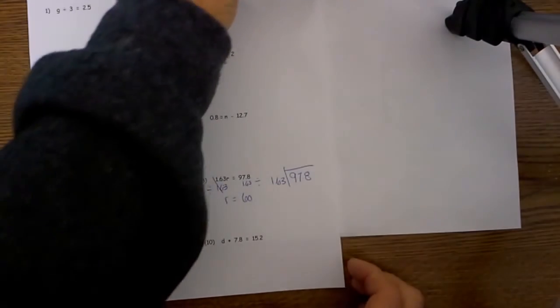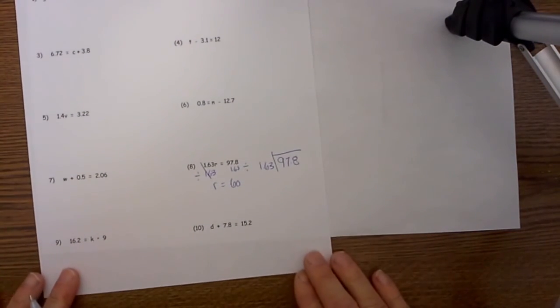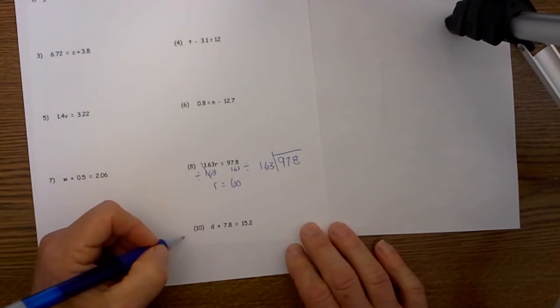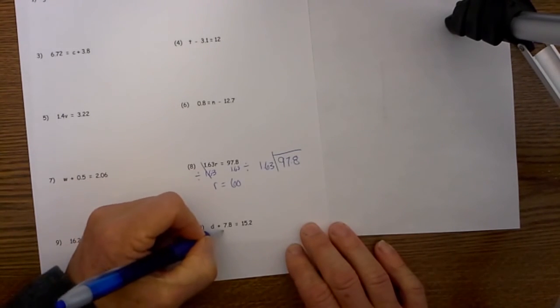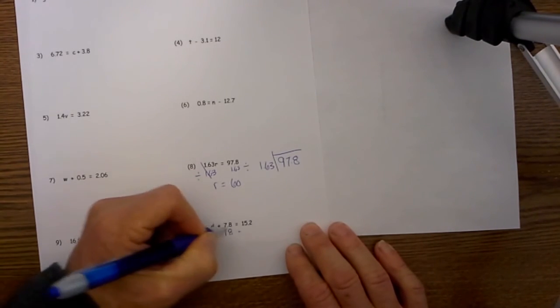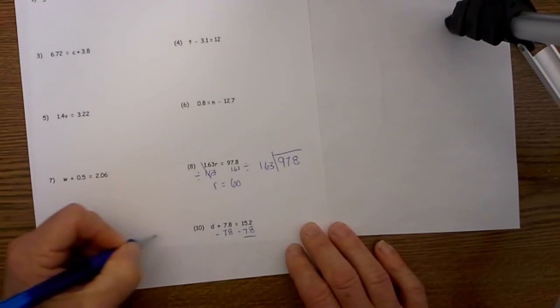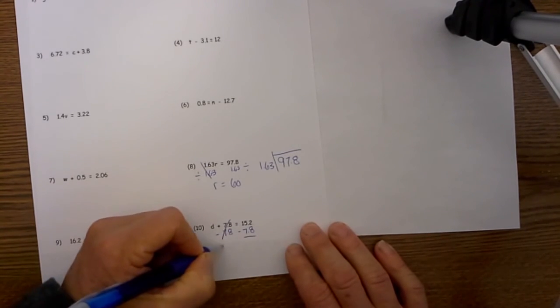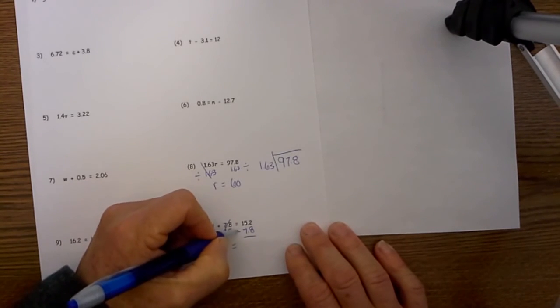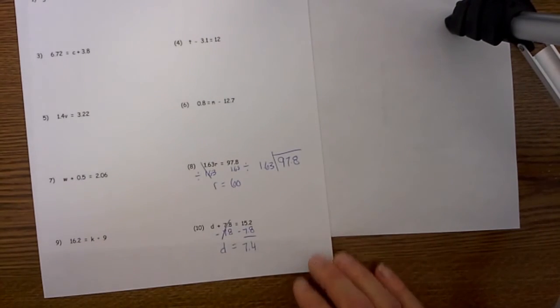And finally for the last one we have d plus 78 equals 15.2. In order to undo the division we use subtraction. What we do to one side we must do to the other. So we take 15.2 minus 7.8 and this cancels. d is equal to 15.2 minus 7.8 is 7.4.